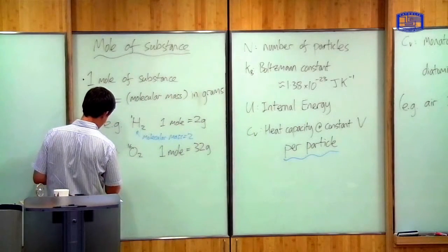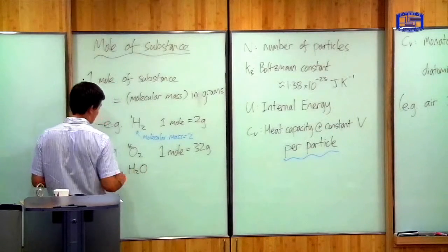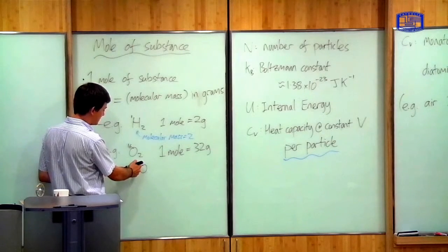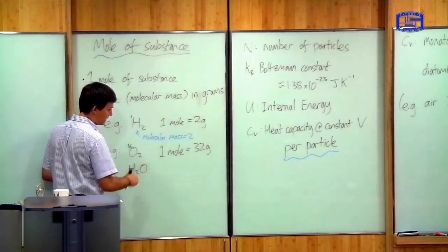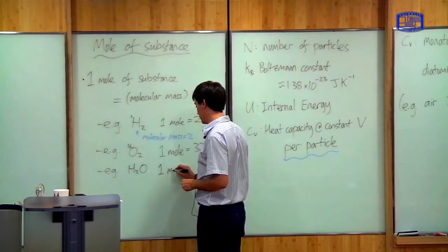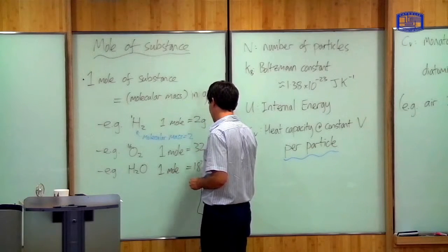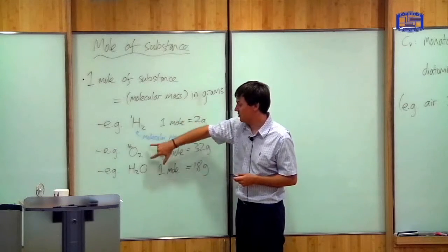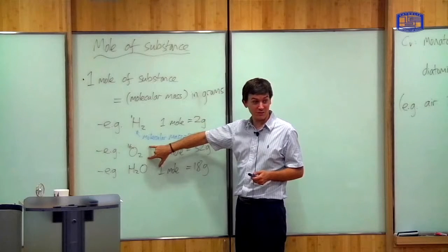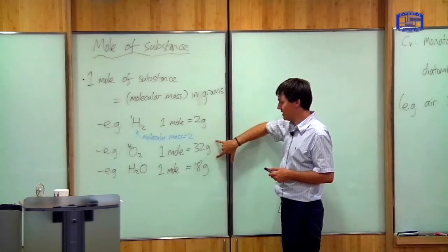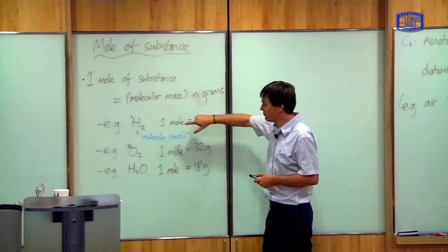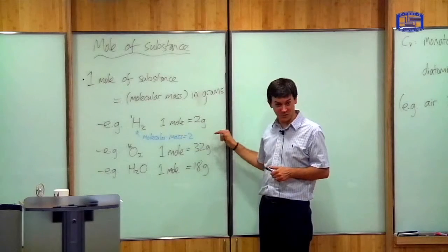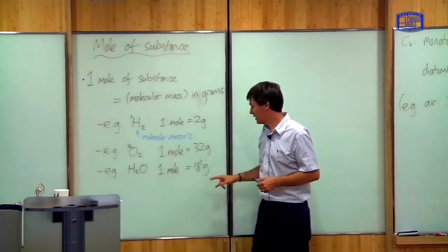If you look at oxygen, oxygen has an atomic weight of 16 and there are two atoms in a molecule, therefore one mole of oxygen is equal to 32 grams. And one final example: if we look at water, H₂O, hydrogen has atomic mass one and oxygen has atomic mass 16, so it's 1 + 1 + 16 = 18, and one mole of water is equal to 18 grams. Oxygen is 16 times heavier than hydrogen, and one mole of oxygen is 16 times heavier than one mole of hydrogen, which means the number of hydrogen molecules in one mole of hydrogen equals the number of oxygen molecules in one mole of oxygen.